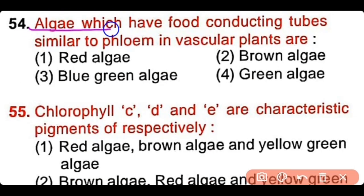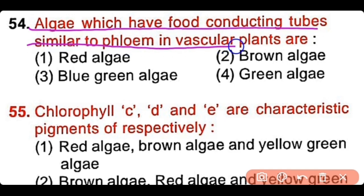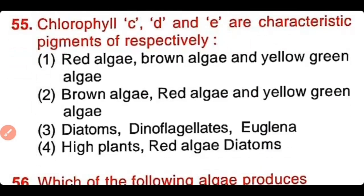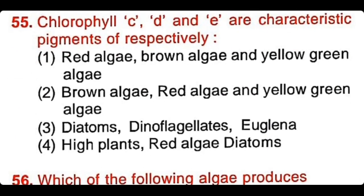Question number 54: Algae which have food conducting tubes similar to the phloem in vascular plants are known as red algae, brown algae, blue-green algae, or green algae? The correct answer is option 2. Brown algae have food conducting tubes similar to the phloem of vascular plants.